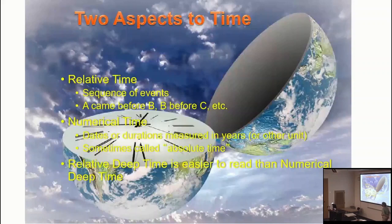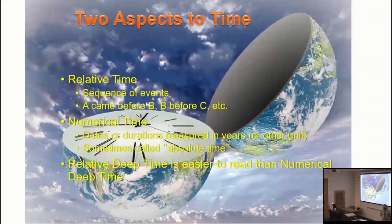And it turns out relative deep time is a lot easier to read than numerical deep time. Same with personal time: if I asked you exactly what minute you got out of bed, showered, and ate breakfast on September 13, 2017, you'd probably be unlikely to give me that to the exact minute. But if I asked you in what sequence you did those things, you'd probably be more accurate — most of us have a pattern with that.